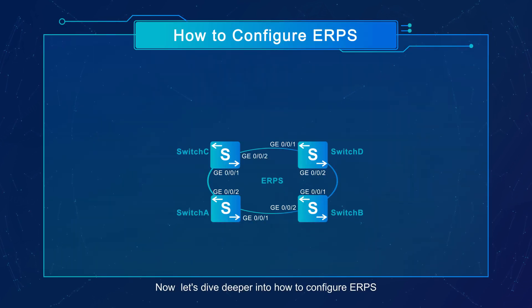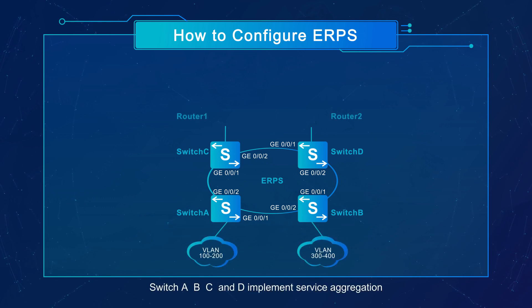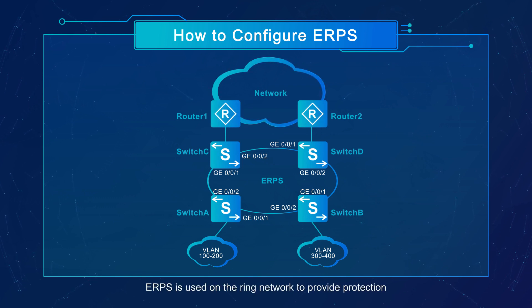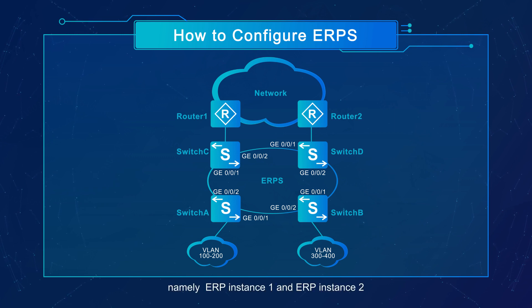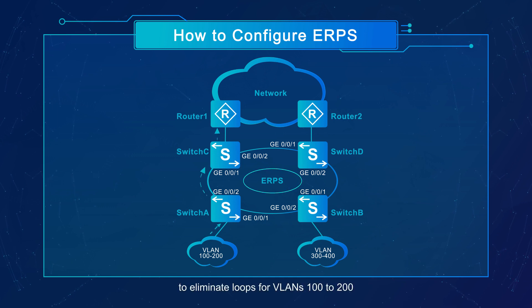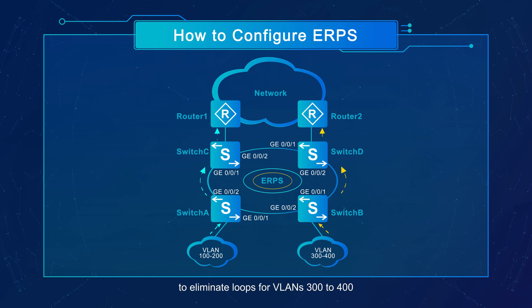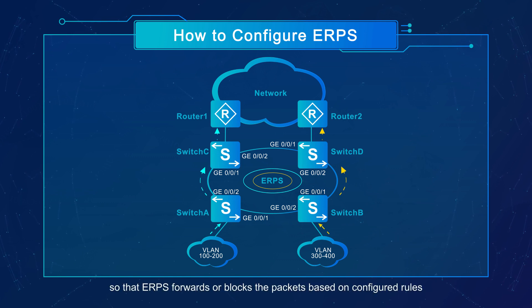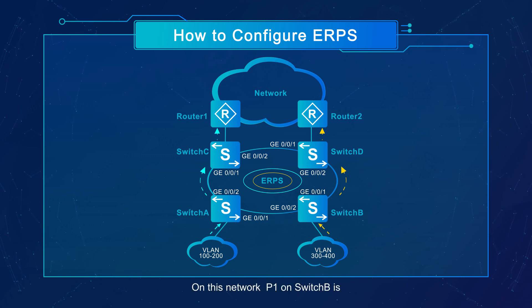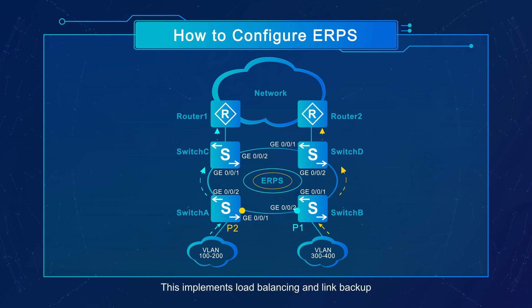Now, let's dive deeper into how to configure ERPS. On a single ring network, switches A, B, C, and D implement service aggregation at layer 2 and process layer 3 services. ERPS is used on the ring network to provide protection switching for layer 2 redundant links. Configure two ERP instances — ERP instance 1 and ERP instance 2 — on switches A, B, C, and D. ERP instance 1 is used for ERPS ring 1 to eliminate loops for VLANs 100 to 200, and ERP instance 2 is used for ERPS ring 2 to eliminate loops for VLANs 300 to 400. The VLAN in which RAPS PDUs and data packets are transmitted must be mapped to an ERP instance so that ERPS forwards or blocks the packets based on configured rules. If the mapping is not configured, broadcast storms may occur on the ring network. On this network, P1 on switch B is a blocked port in ERPS ring 1, and P2 on switch A is a blocked port in ERPS ring 2, implementing load balancing and link backup.